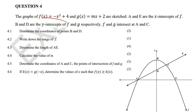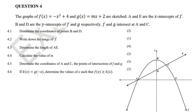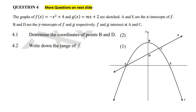Here are all the questions that we are going to look at for this one, but I'm going to split them up onto different pages. The graphs of F, which is a parabola, and G, which is the straight line MX plus 2, are sketched.